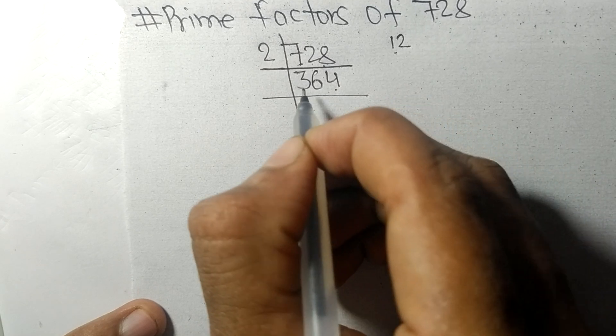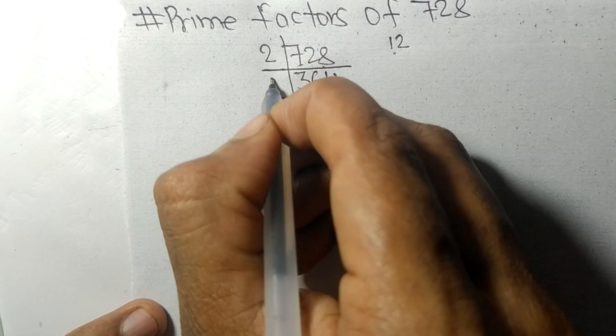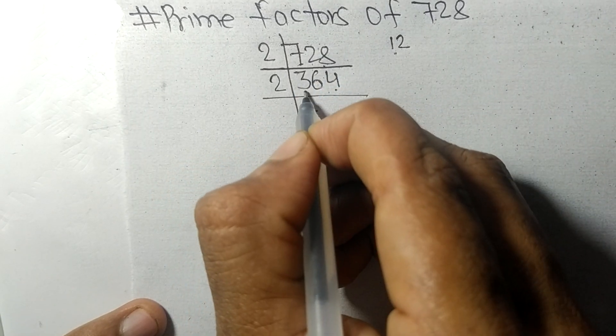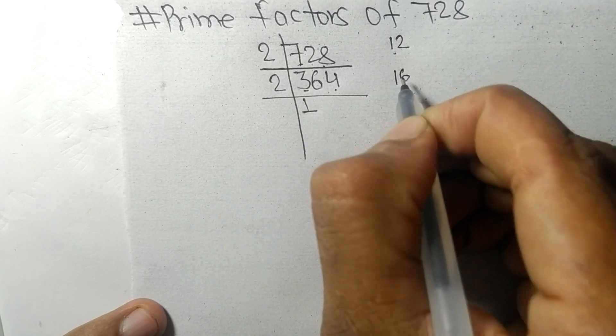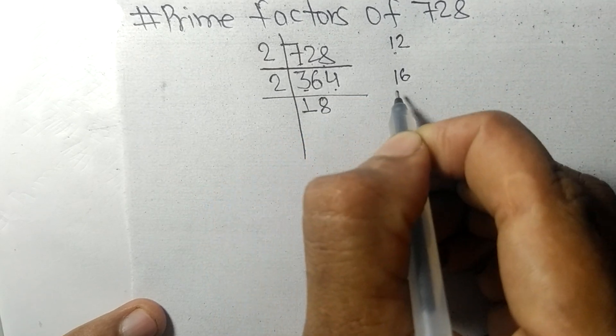2 times 1 is 2, remainder 1 and 6. 16. 2 times 8 is 16, and 2 times 2 is 4. We get 182.